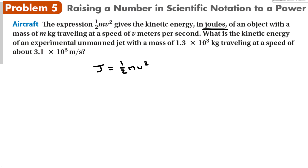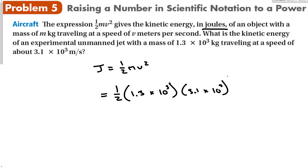What is the kinetic energy of an experimental unmanned jet with a mass of 1.3 times 10 to the 3rd kilograms traveling at a speed of 3.1 times 10 to the 3rd meters per second? Using the formula one-half mv squared, I compute one-half times 1.3 times 3.1 squared. The result is approximately 2.5 times 10 to the 9th joules — adding the exponents: 6 plus 3 more gives the power of 9.